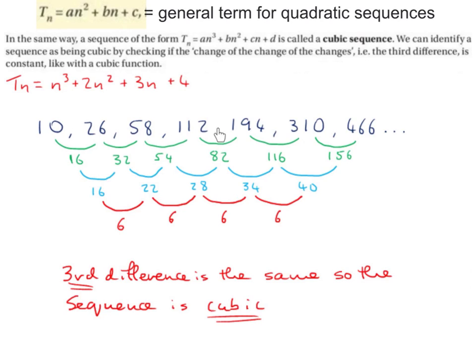So here I have a sequence of numbers. I'm going to start off by finding the first difference. The difference between 10 and 26 is 16. 26 and 58 is 32. 58 and 112 is 54. 112 and 194 is 82. 194 and 310 is 116. 310 and 466 is 156. Clearly the first difference is not the same, so this is not a linear or an arithmetic sequence.